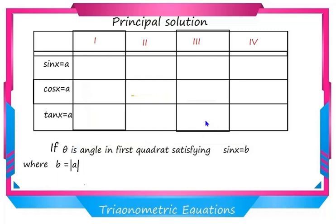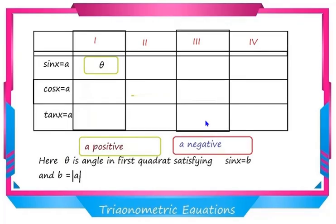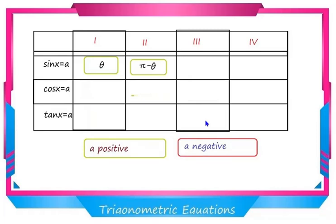Then you consider the sign of A. If A is positive, sin is positive in the first and second quadrants, so the principal solutions are θ and π − θ. If A is negative, sin is negative in the third and fourth quadrants, so the principal solutions are π + θ and 2π − θ.